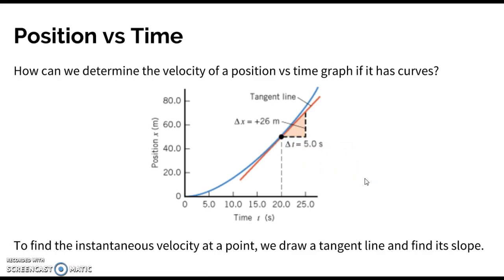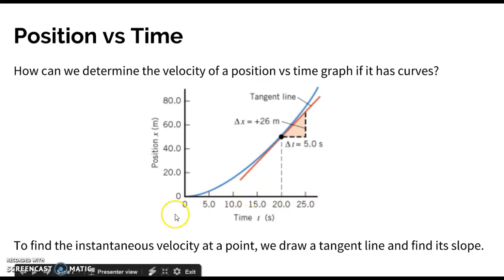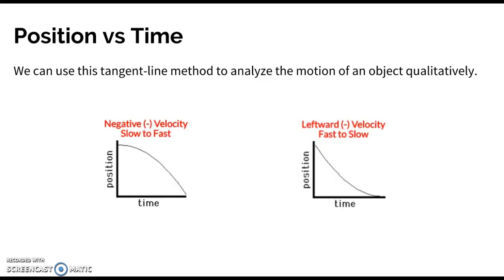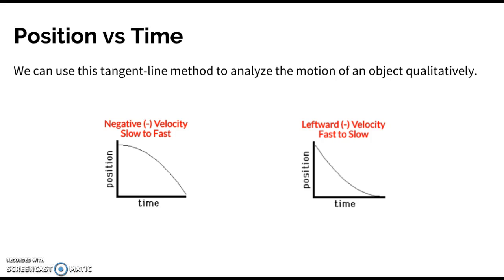For those in calculus: if you had the equation for the position curve as a function of t squared, you would take the derivative with respect to t, which gives you a function for velocity. Plugging in any time value gives the instantaneous velocity at that point. Coming back to the tangent line method — in class you won't need to implement it to calculate instantaneous velocity, but it helps us think about the slope of a graph.